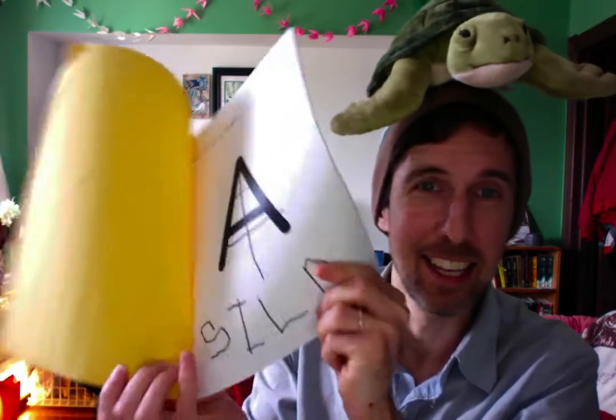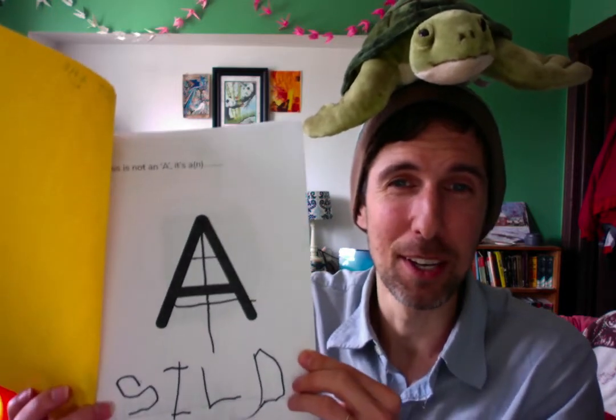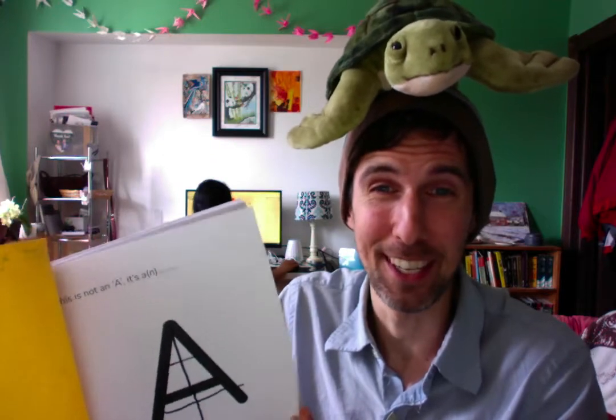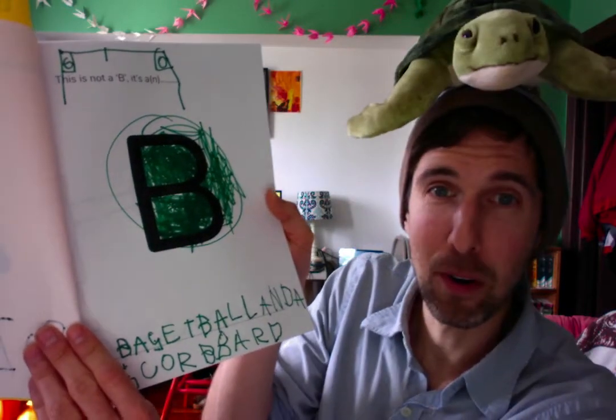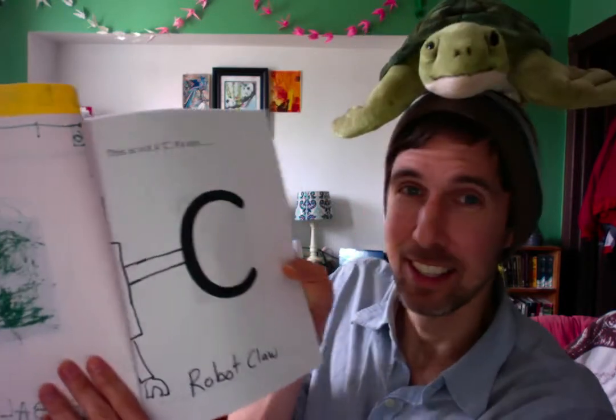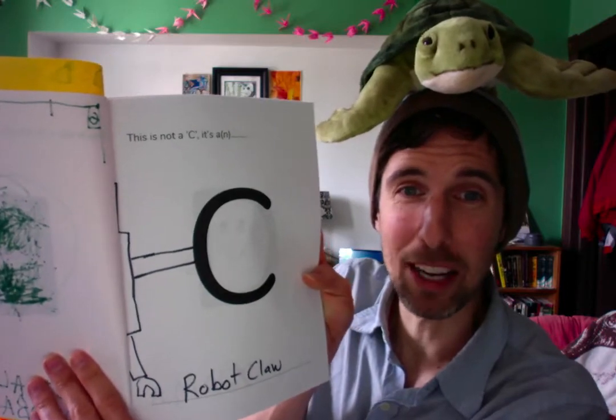This is not an A, it's a slide. Does slide start with an A sound? No, it doesn't — it starts with the S sound, right? But it can just be whatever kind of creative picture you want. You can go for bonus points if you want and try to make it something that starts with that same letter. This is not a B, it's a basketball and a scoreboard. And you can really use your imagination. This is not a C, it's a robot claw.